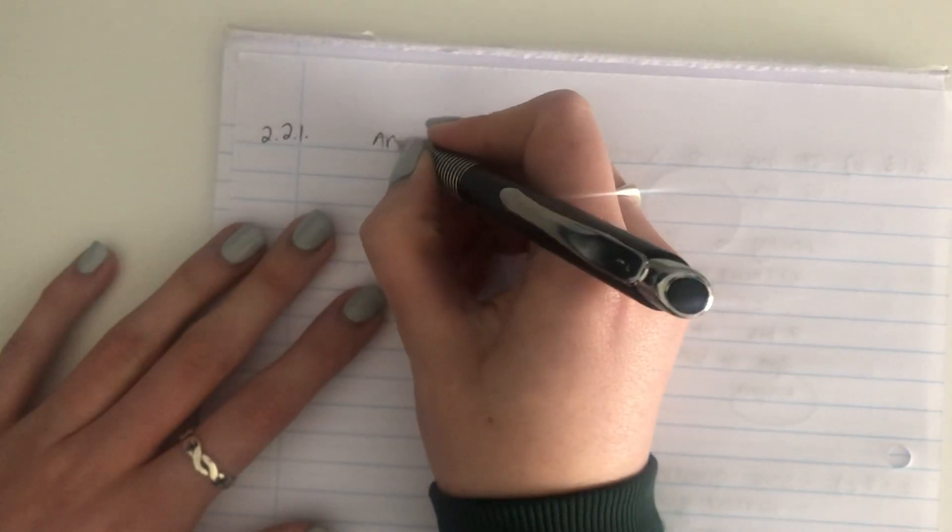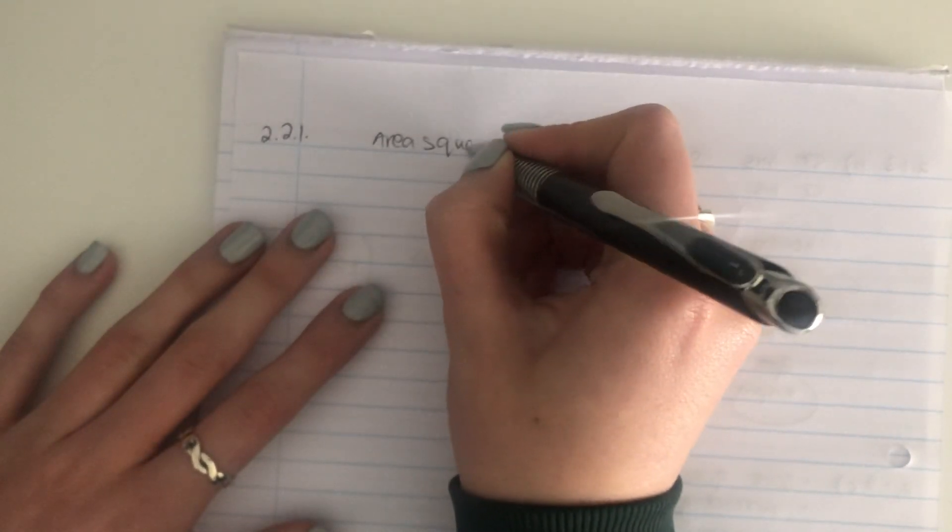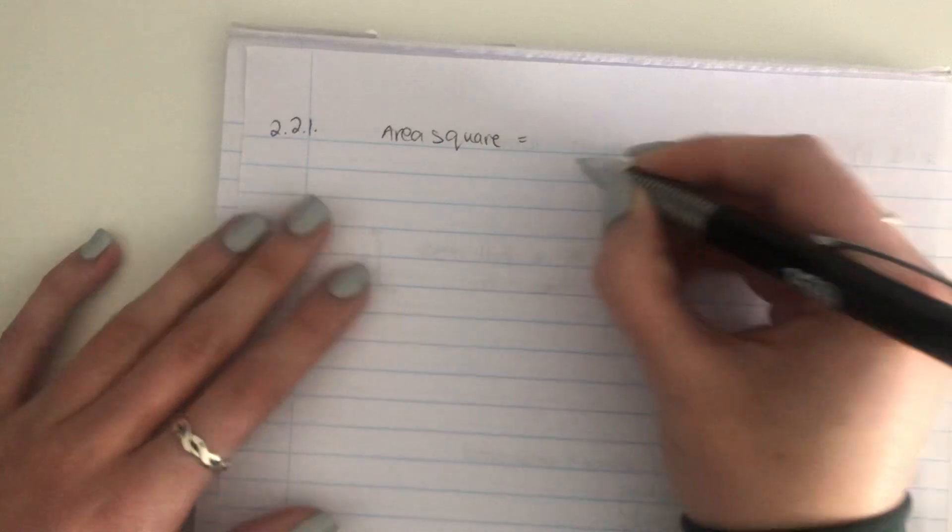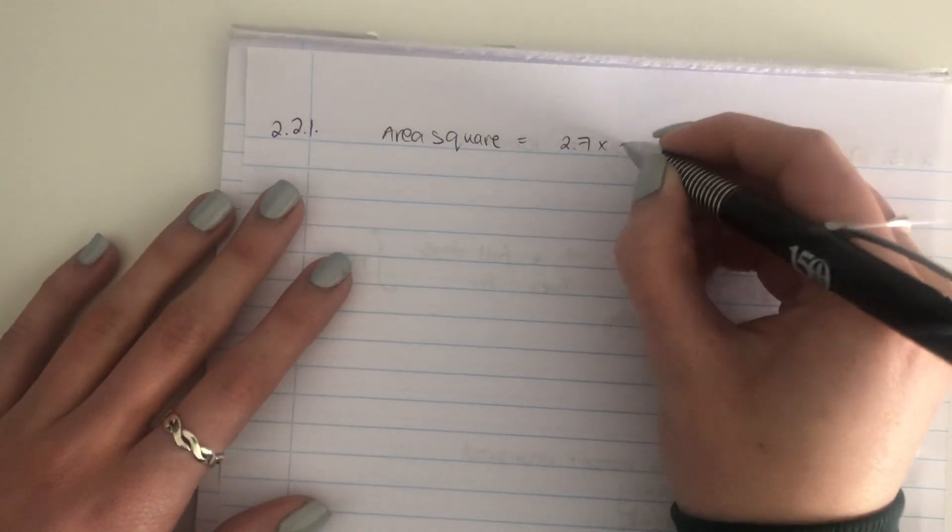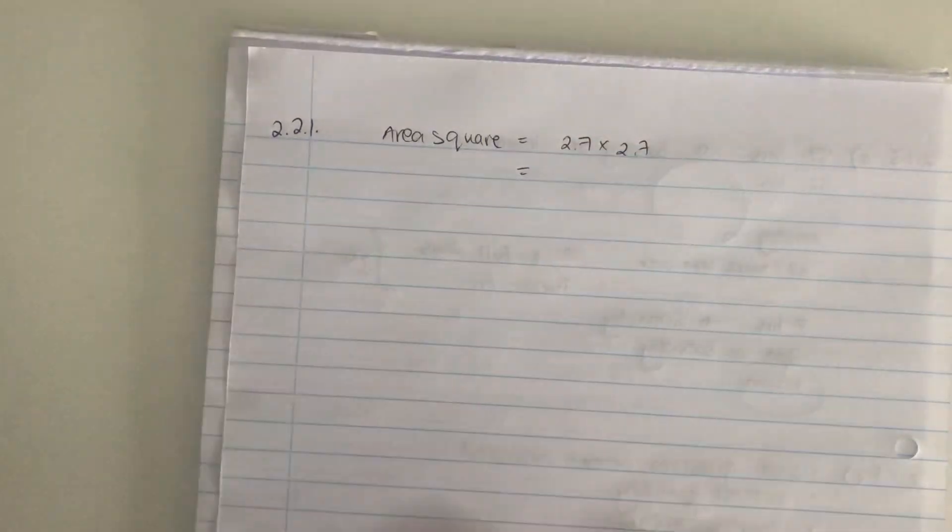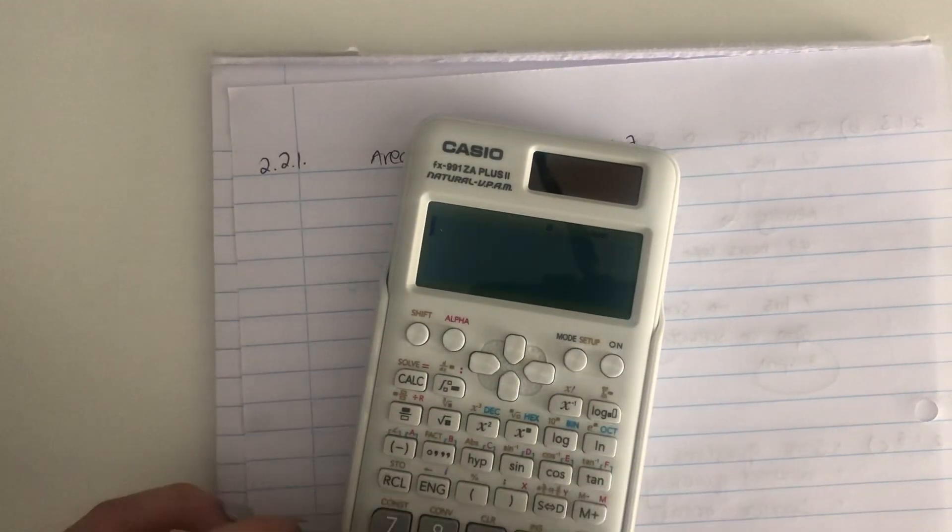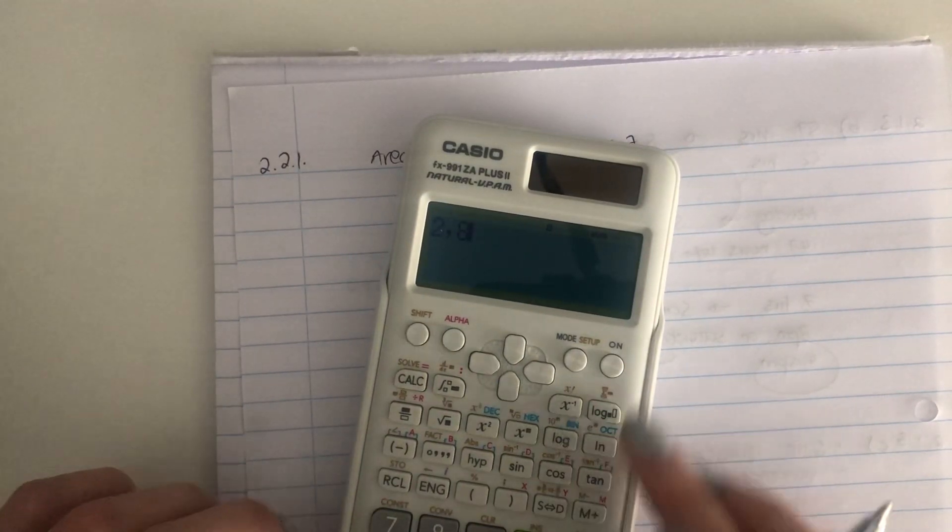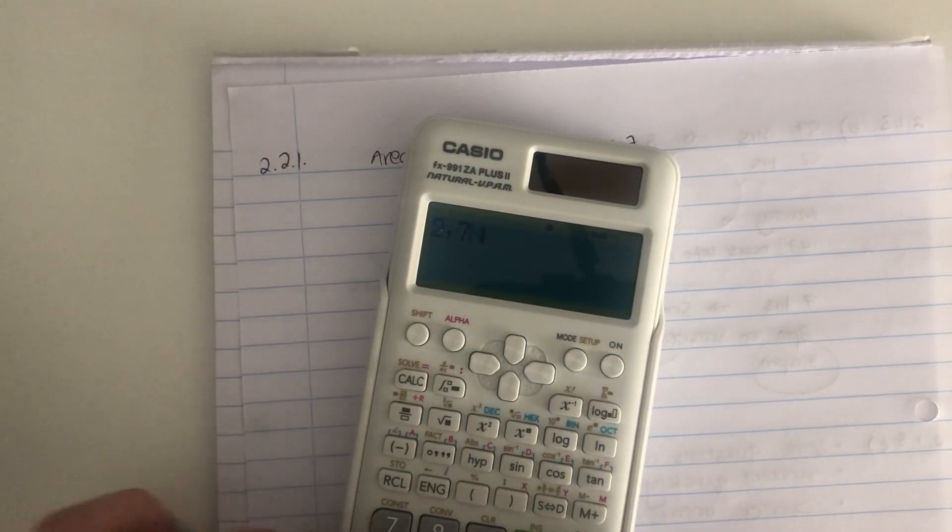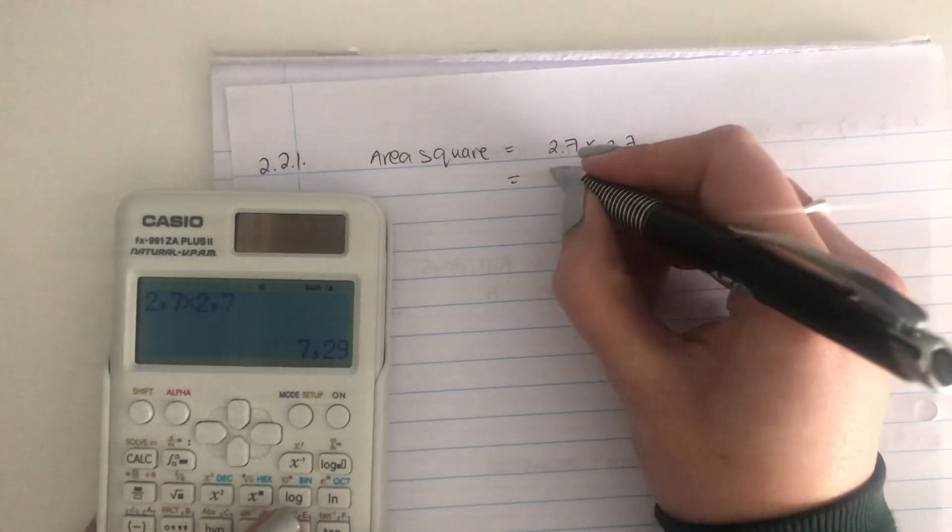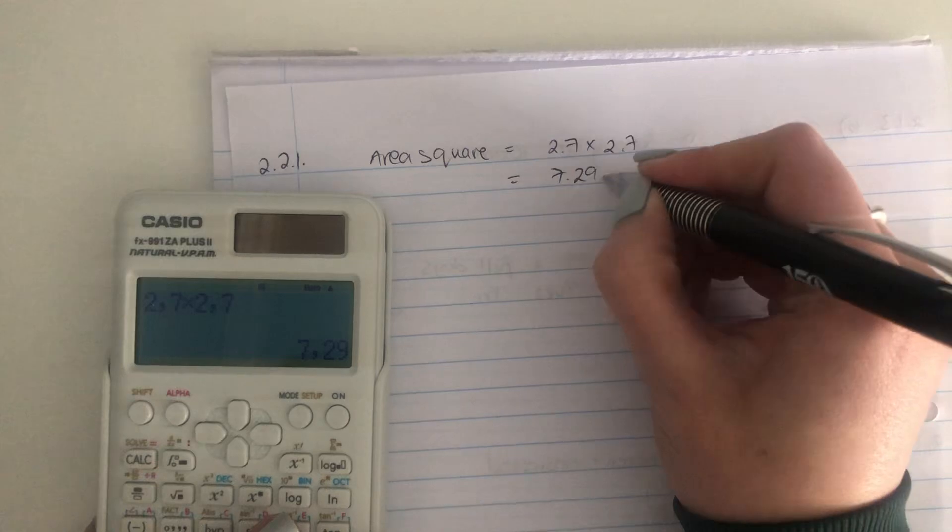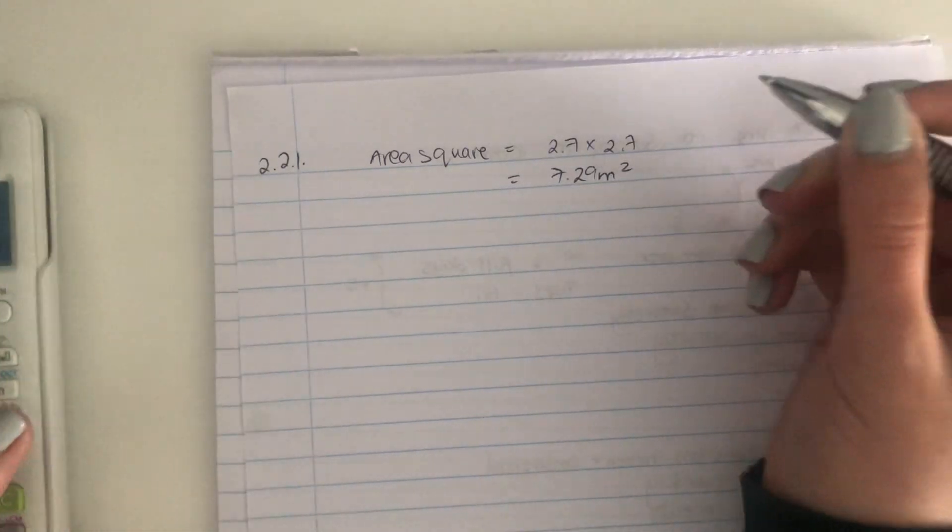So first of all, always label your question. So what we're going to do is we're going to work out the area of each of these semicircles, the area of the full square, and we're going to subtract the area of semicircles from the full square. So let's start with a square. That's easy enough. So area of the square equals side times side. Side times side in this case is 2.7 times 2.7. I think it is 8.1. Let's just check whether I'm right. I am very wrong, and that's fine. That's why we have calculators, and that's 7.29 meter squared.